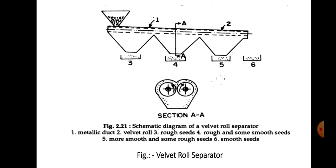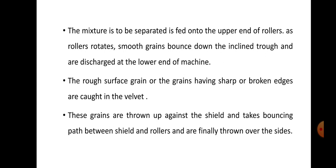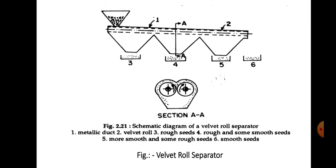In the velvet roll separator, two rolls rotate in opposite directions and their arrangement is parallel and inclined. In operation, the mixture to be separated is fed onto the upper end of the rollers. As the rollers rotate, smooth grains bounce down the inclined trough and are discharged at the lower end of the machine.